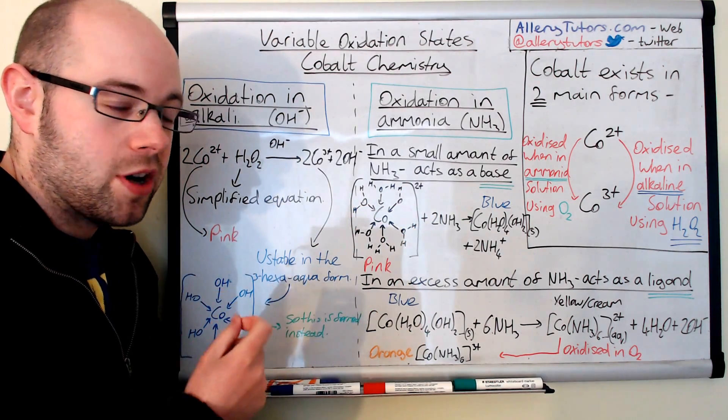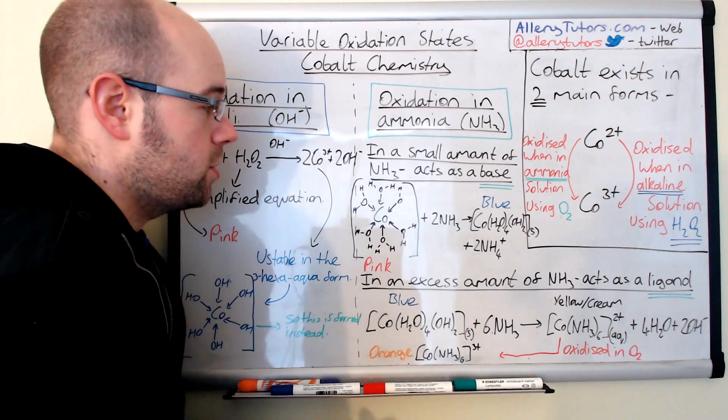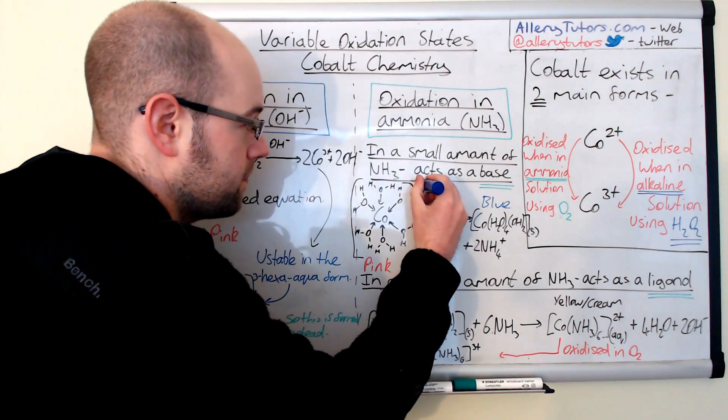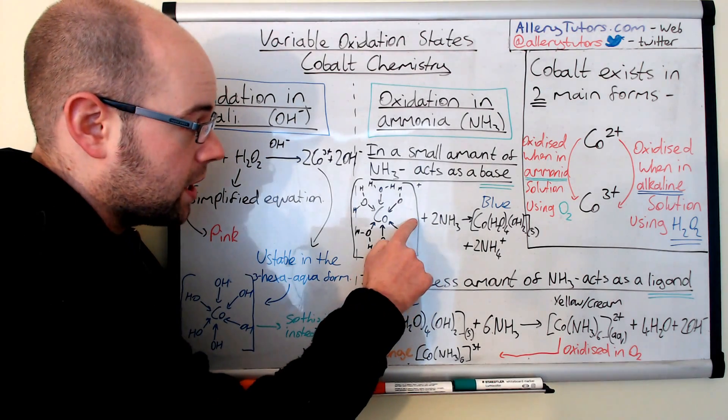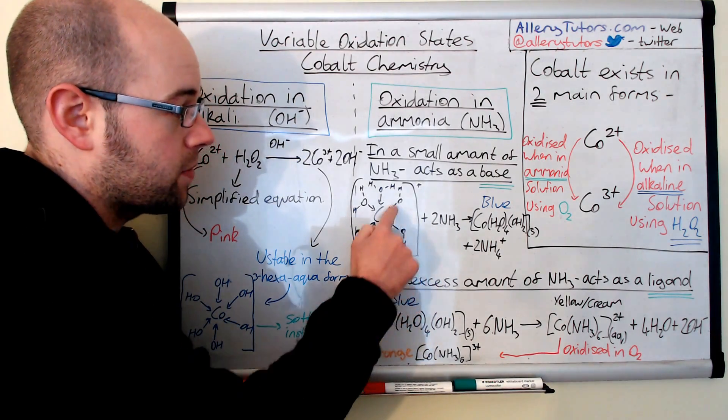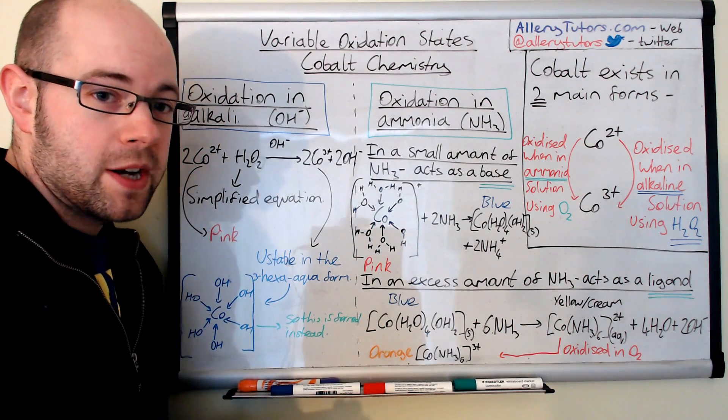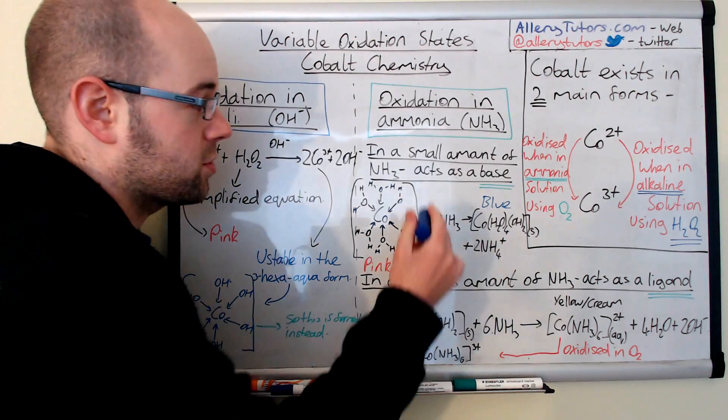Now, OH is a minus charge, and what this does is it reduces the charge of the complex from two-plus to a single-plus. But we also have another ammonia, and this will take another proton away from a different water ligand. And you can see now we've got, effectively, two lots of OH-minus. And again, because that minus charge, because we've got another minus charge, effectively, we have a complex that doesn't have a charge at all.